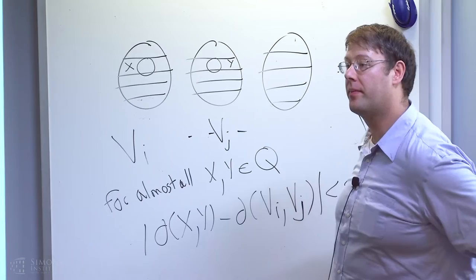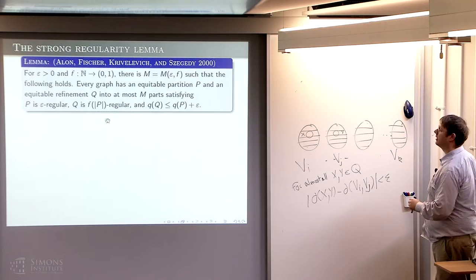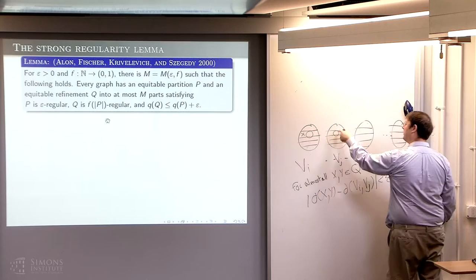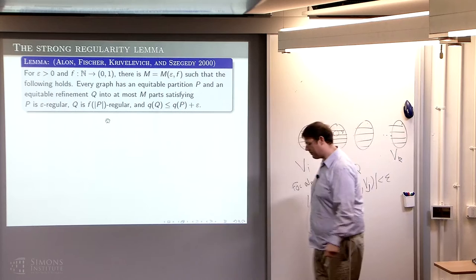In response to a question: the total number of parts in Q is at most M. If you add up all these little parts, the total number is M. These are equitable partitions, so they essentially have the same size.